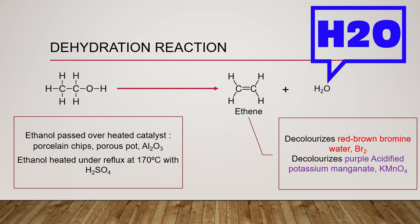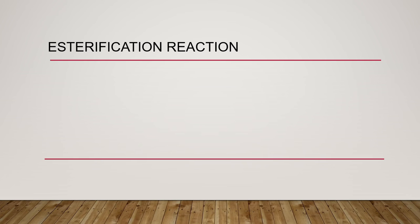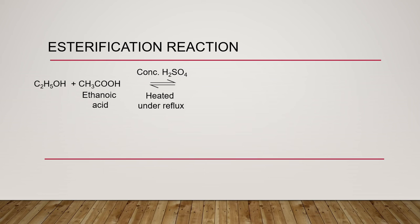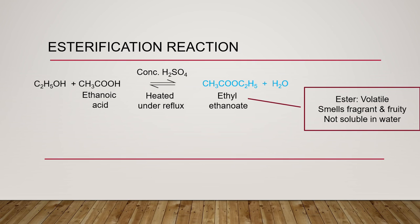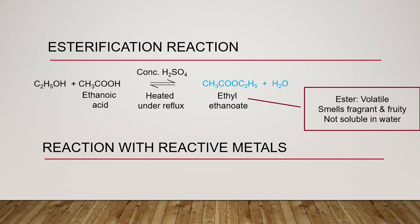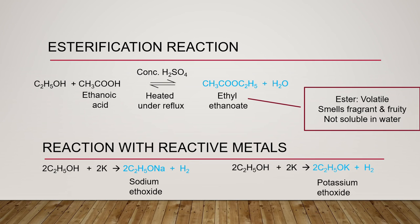Another dehydration method involves heating ethanol under reflux at 170 degrees Celsius with excess concentrated sulfuric acid. In the presence of concentrated sulfuric acid acting as a catalyst, an ester is formed along with a water molecule. The ester formed smells fragrant and fruity. It is also volatile and not soluble in water. Additionally, ethanol reacts with reactive metals such as sodium and potassium to form sodium ethoxide or potassium ethoxide, along with hydrogen gas.